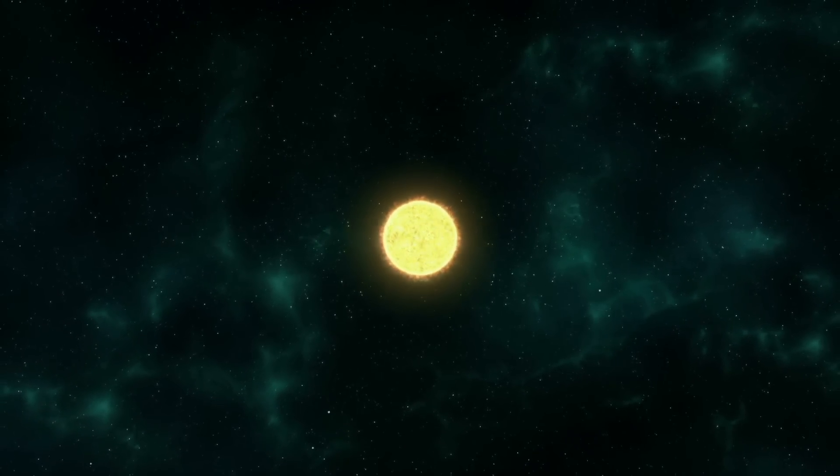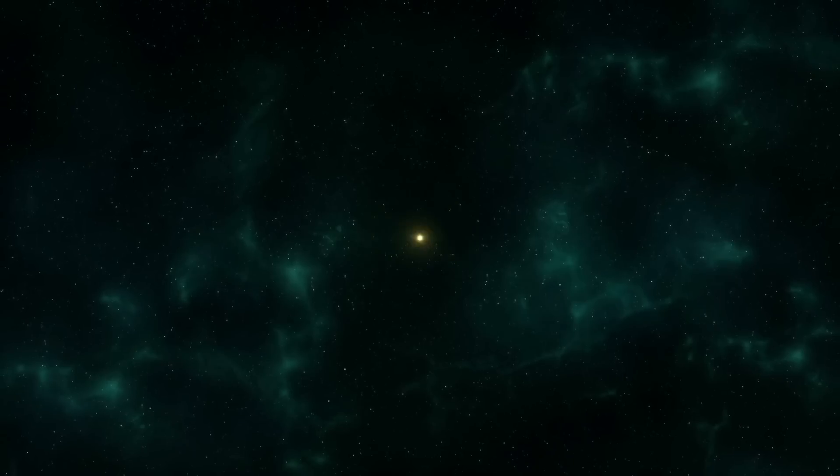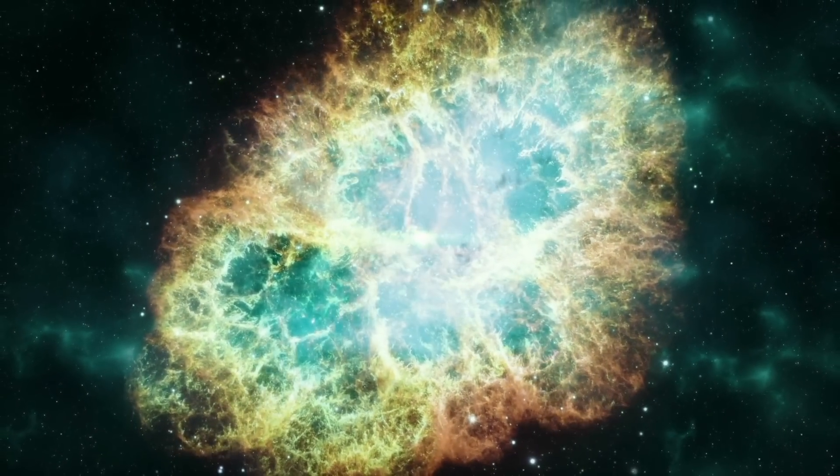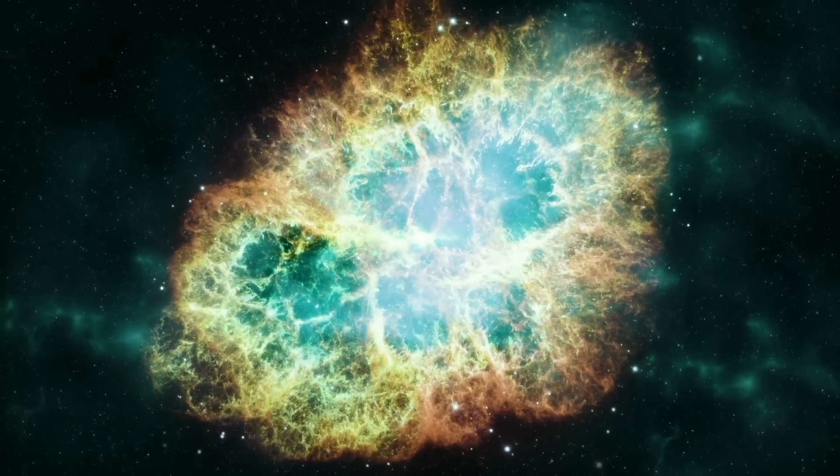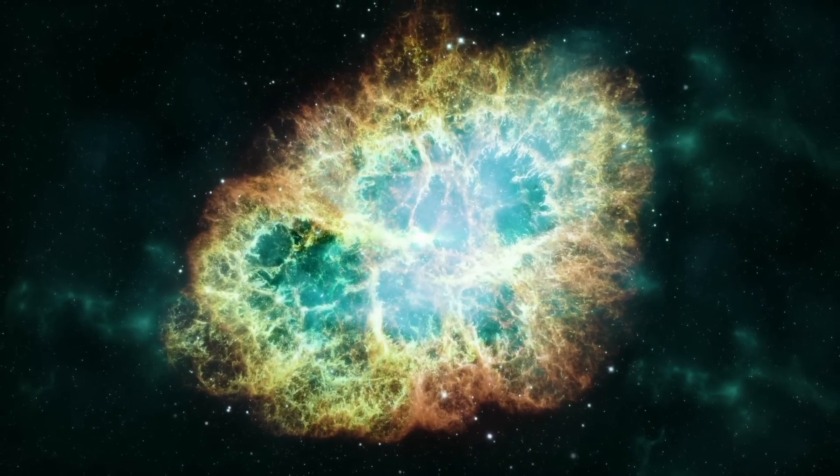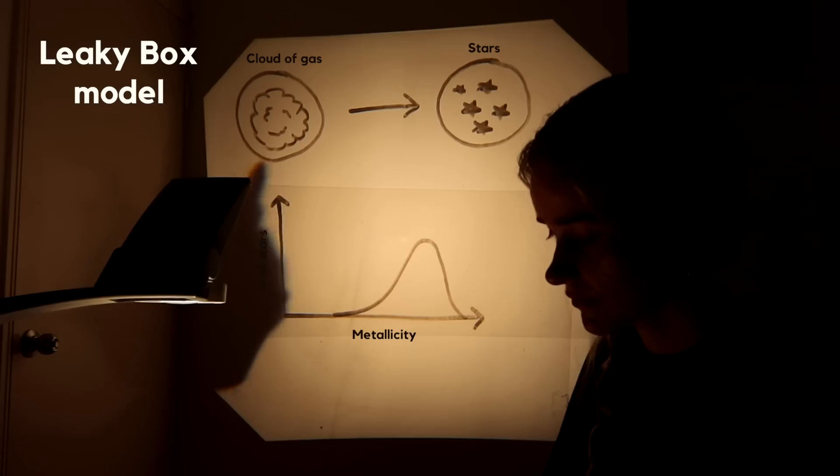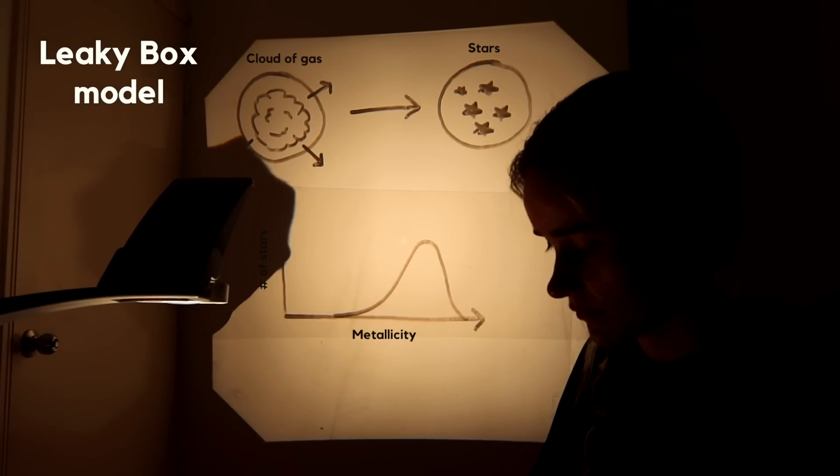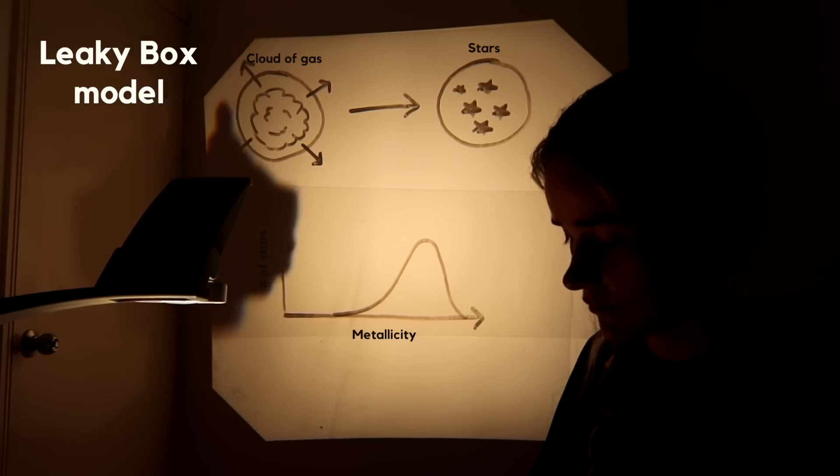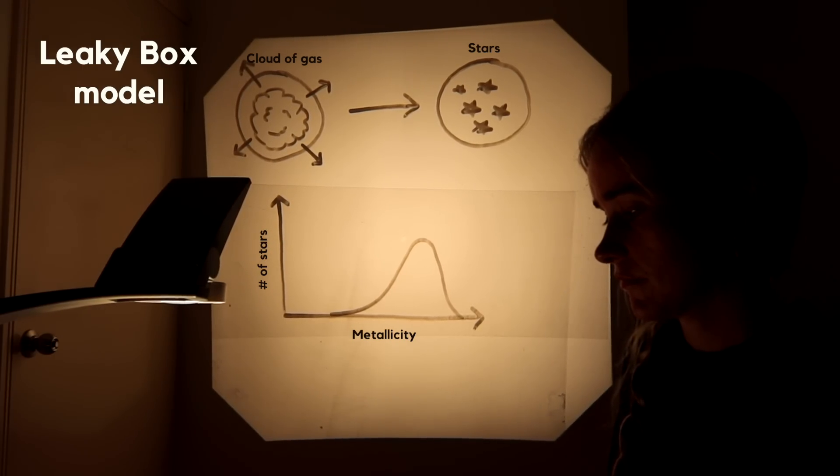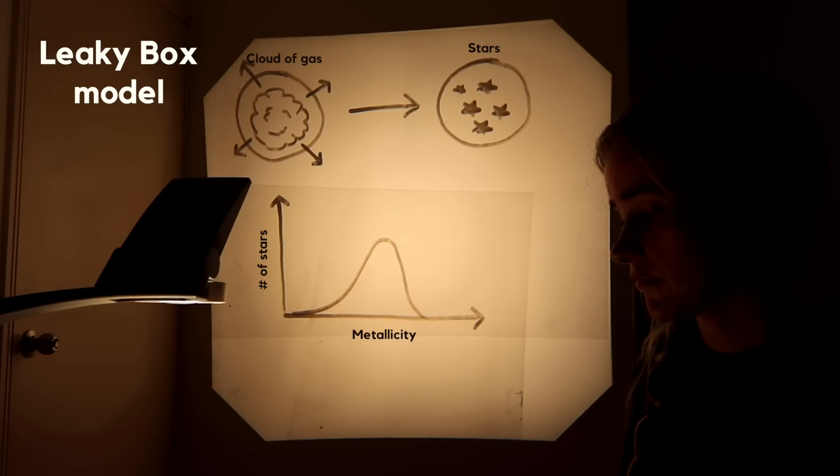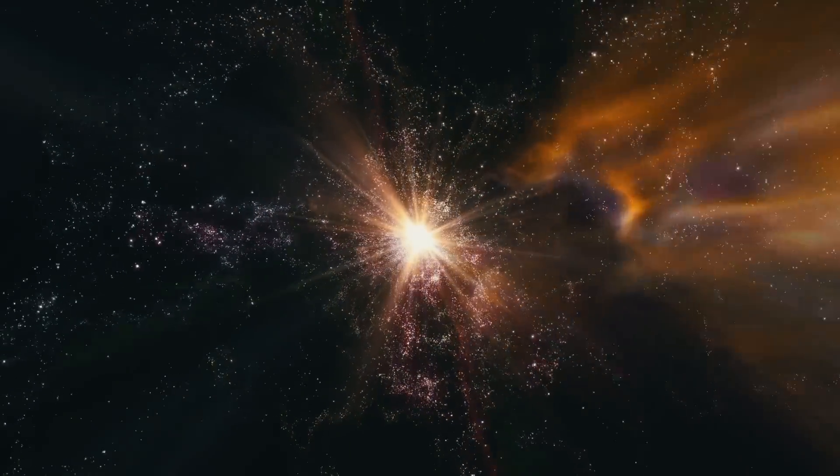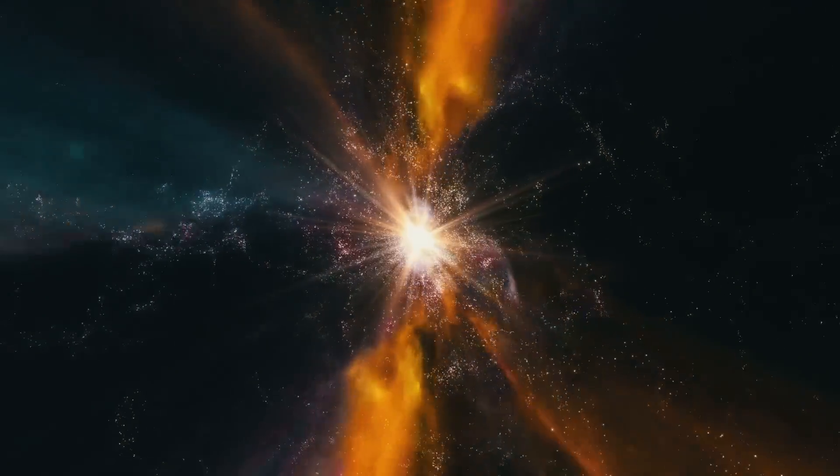Stars make metals through nuclear fusion in their cores or in supernova explosions. Supernovae release metals back into the interstellar medium, the space between the stars from which new stars with higher metallicities may form. A variant of the closed box is the leaky box, which allows some gas to escape out into the rest of the galaxy. The abundance distribution for a leaky box would be the same shape but shifted to the left. The stars have less metal in them on average than stars in a closed box because those metal-rich gas explosions from supernovae are escaping.